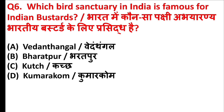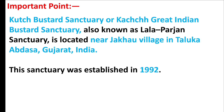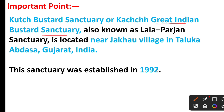Which bustard sanctuary in India is famous for the Indian bustard? The right answer is option C: Kutch. Friends, the Kutch Bustard Sanctuary, or Kutch Great Indian Bustard Sanctuary, also known as Lala Parjan Sanctuary, is located near Jakho village in Taluka Avdasa, Gujarat, India. This sanctuary was established in 1992.